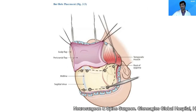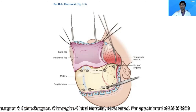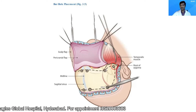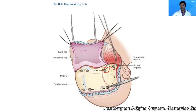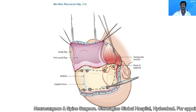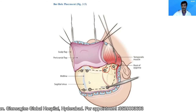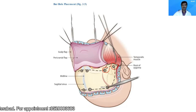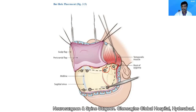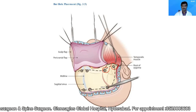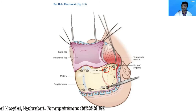Now coming to the burr holes. The first burr hole is placed at the root of the zygoma, at the posterior root. The second is the key burr hole. The third burr hole is placed in front of the coronal suture, just over the superior temporal line. The two midline burr holes are placed as close to the midline as possible, straddling the midline. When placing these posterior burr holes, be very careful not to penetrate the dura mater, which may injure the superior sagittal sinus and cause catastrophic bleeding.